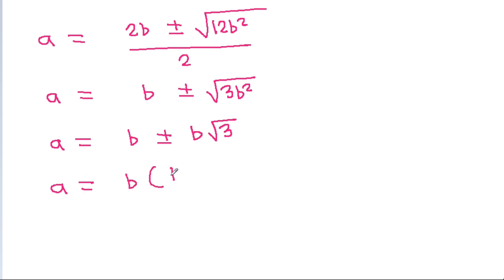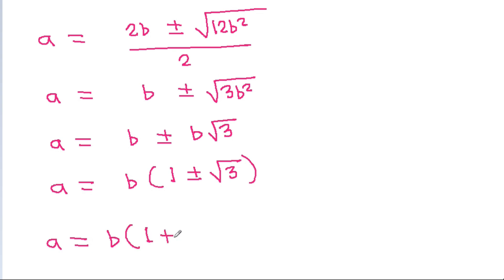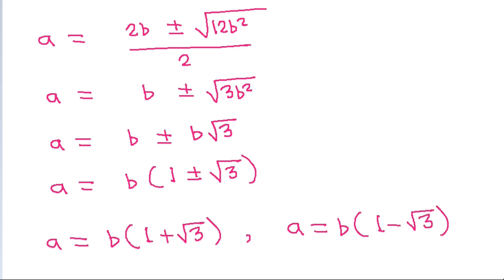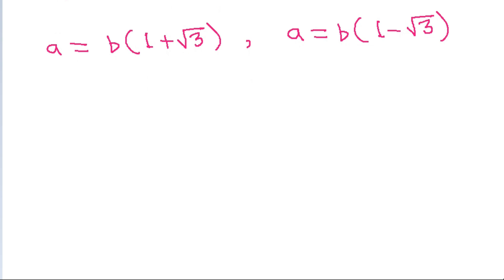So a equals b(1 + √3) or a equals b(1 − √3). Since a and b must both be positive, and (1 − √3) is negative, we discard that solution. Therefore a equals b(1 + √3).